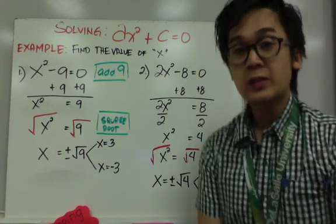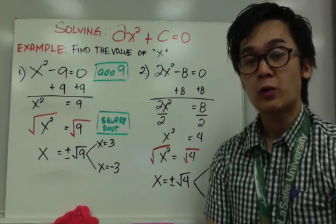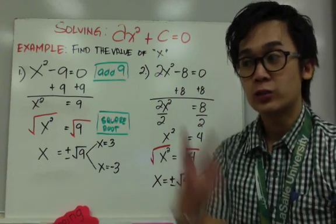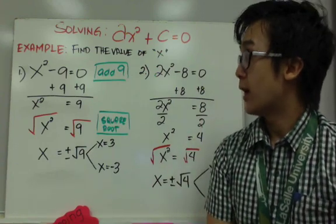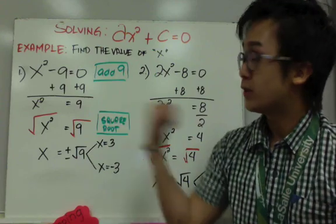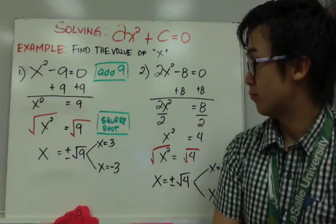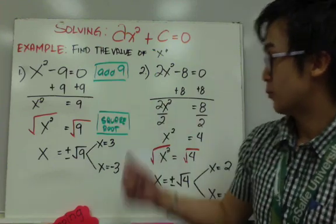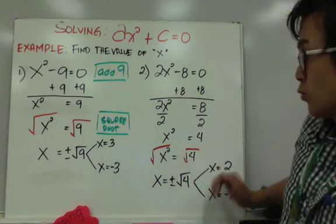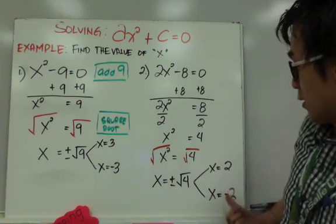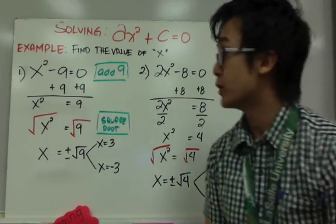Notice that every time we solve a quadratic equation, we always have two values of x. In these two examples, the x values are the same number, the only difference being that one is negative and the other is positive.